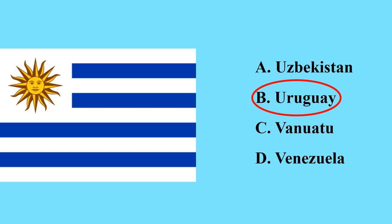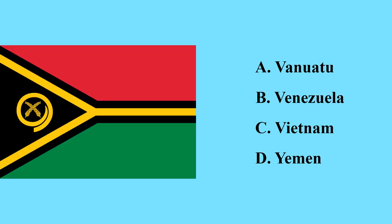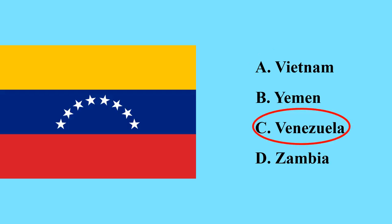This is the flag of Uruguay in South America. This is the flag of Uzbekistan, a country in Asia. This is the flag of Vanuatu — it is a country in Oceania. This is the flag of Venezuela — it is a country in South America.